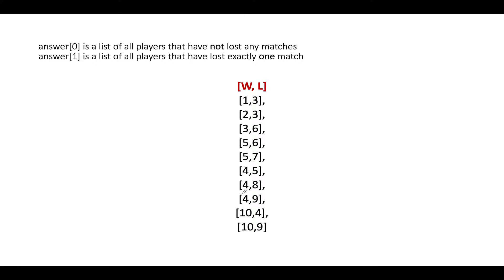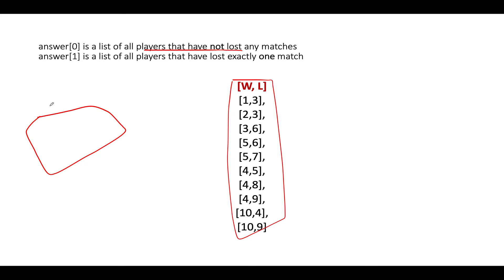Let's walk through the example and come up with the algorithm. Given the matches list, in the first pass I need to identify all players who have not lost any match. I will iterate through the entire matches array and identify the IDs of all players, creating a set called AllPlayerSet (AP). Along with this, I'll create another set representing all players who have lost at least one match, called LoserSet (LSet).